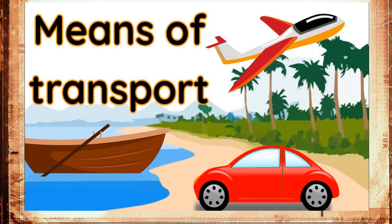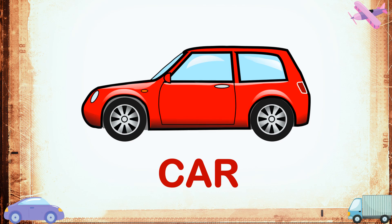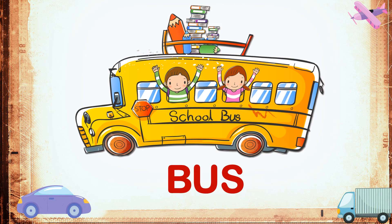These vehicles are called means of transport. Some means of transport move on land. This is called land transport. This is a car — it is land transport. This is a bus — bus is also land transport.